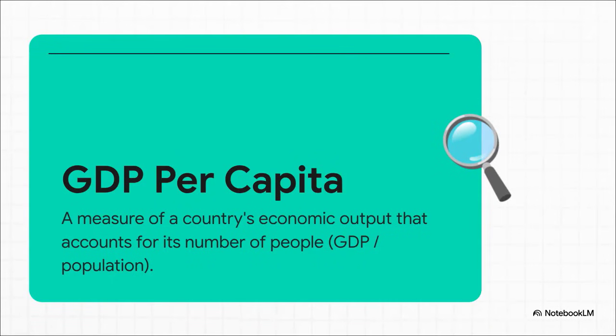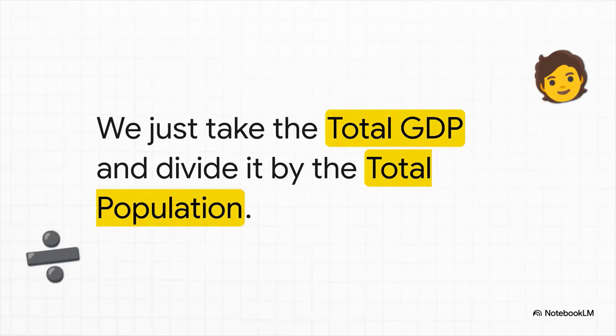This is why economists don't just stop at GDP. They look at something called GDP per capita. Per capita is just a fancy Latin way of saying per person or per head. It's a way to measure the average piece of the economic pie for each person. And guess what? The formula is, once again, super straightforward. You just take your total GDP for the year and divide it by the number of people in your country.